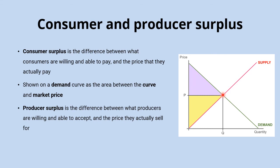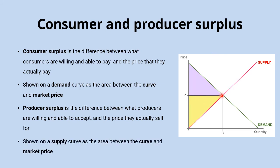In a similar way to consumers, some producers would have been willing to offer the product at a lower price than the market price P. Just like consumers who would have been willing to pay more, these producers still charge the going market price P. That leaves the producer surplus as the area between the supply curve and the market price, shown by this triangle here.